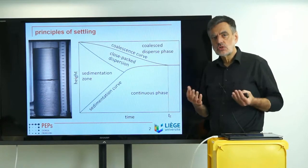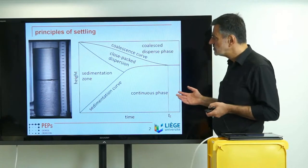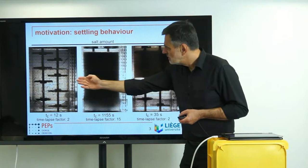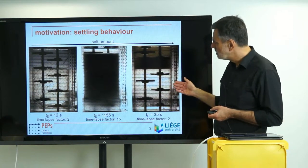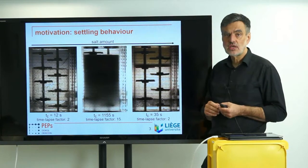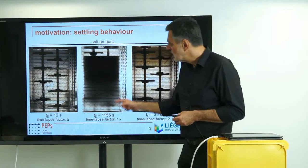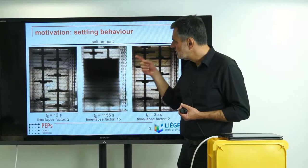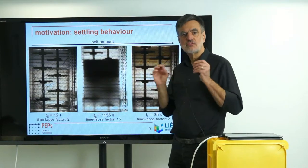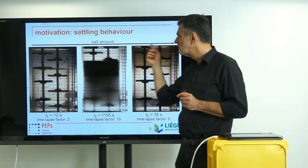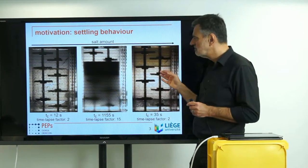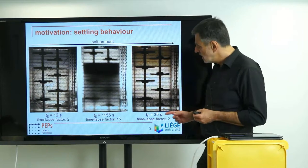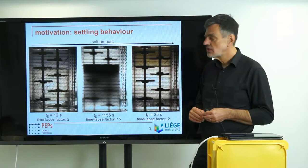Now I want to show you something about the salt influence, which is the headline of the entire chapter. These are three videos where the salt amount has been varied, and you see the same experiment. After some seconds everything is done in one case. Here it takes somewhat longer, about 12 seconds. Here it takes 35 seconds. One should say there is a time lapse factor of 2 in these cases. In the central video it has been speeded up by a factor of 15. Nevertheless, the behavior is much slower than with those two systems. The physical system is identical, but the amount of salt has been varied from very low, some intermediate value and some high value. In that case the settling time is more than 1000 seconds, so more than 20 minutes, as compared to at most 35 seconds.